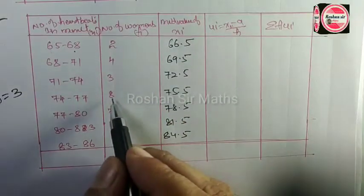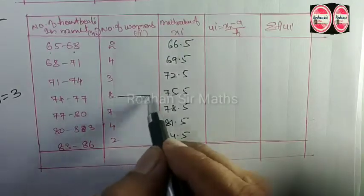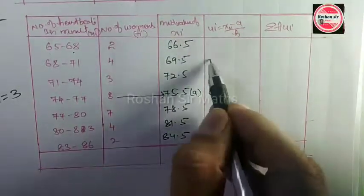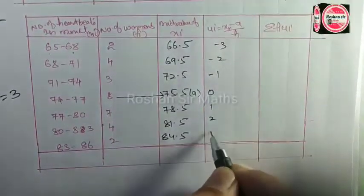So for 8, we assign A. For the ui values, this will be 0, then going up -1, -2, -3, and going down 1, 2, 3.